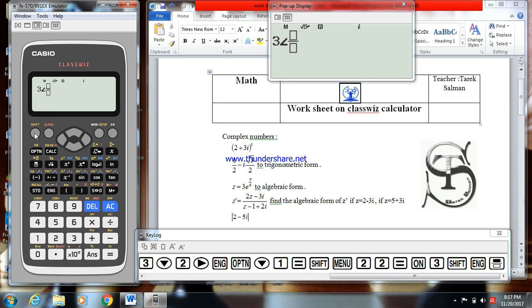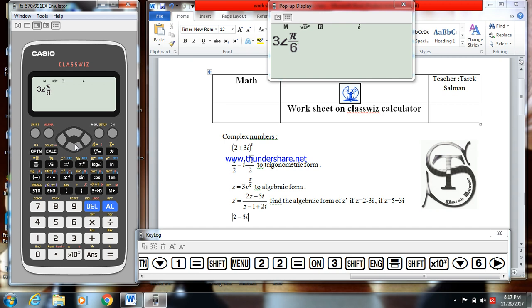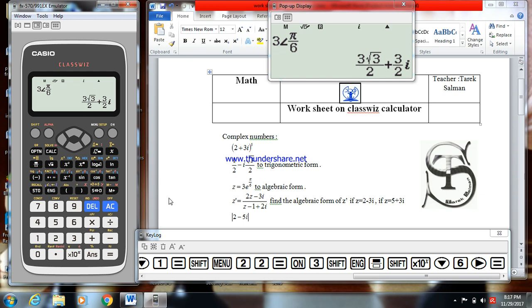I have to put π over 6. So shift pi, go down, 6. And now I put equal. When I put equal I get the number as algebraic form.